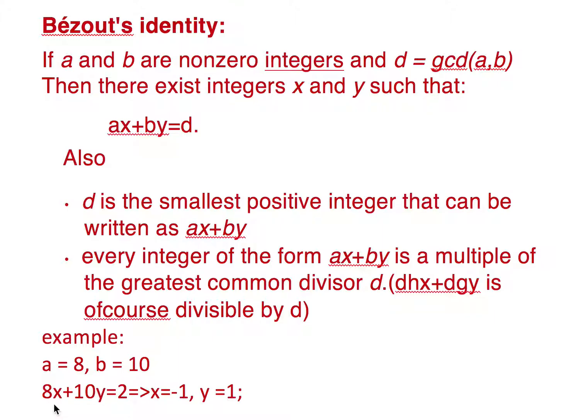And the second thing states that any 8x plus 10y will be divisible by 2, which is of course true because out of 8x plus 10y we can take 2 common and then 2 times 4x plus 5y, which is of course divisible by 2.